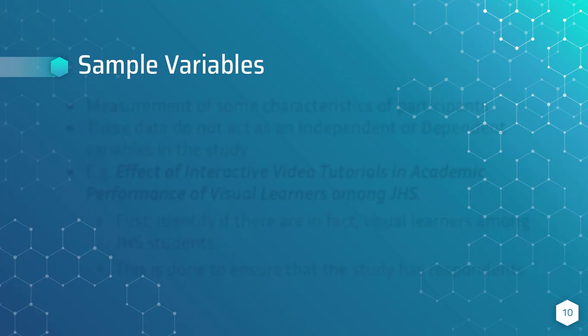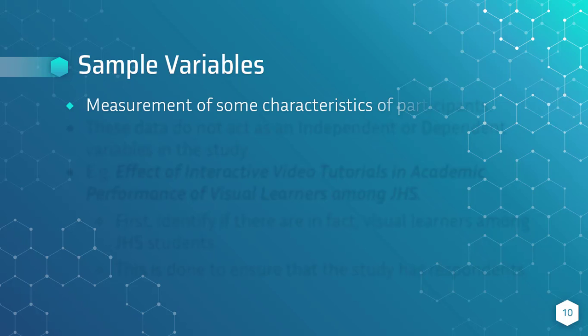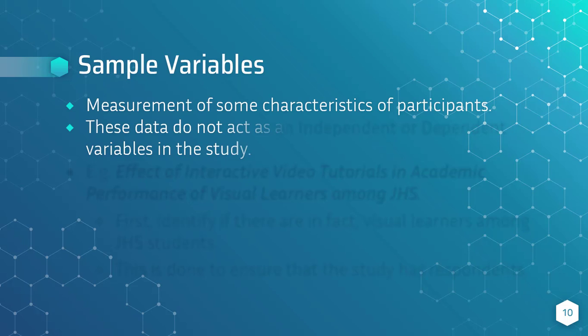Sample variables. There are times when some characteristics of the participants must be measured for some reason. However, the data measured do not act as an IV or a DV specifically. These are called sample variables.